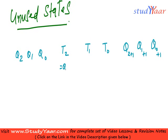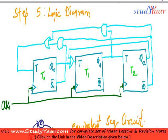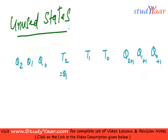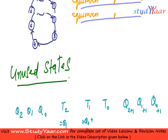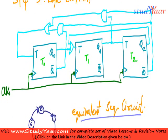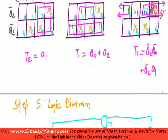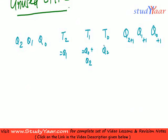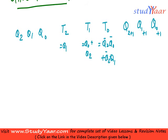So T2 is equal to Q1. T1 is equal to Q0 plus Q2. And T0 is equal to Q2-bar · Q0-bar plus Q2-bar · Q1.